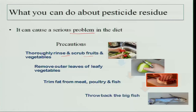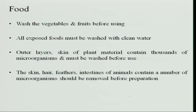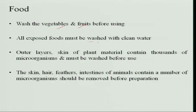Thoroughly rinse and scrub fruits and vegetables so that whatever dust remains on them is removed. Remove outer leaves of leafy vegetables like cabbage, or peel the vegetables, and trim the fat from meat and poultry. Avoid large fish because they are given many insecticides and chemicals and grow very big. Wash all vegetables and fruits thoroughly before using, and all exposed foods must be washed with clean water. Before cooking, food should be washed and clean, and very good water should be used for washing.